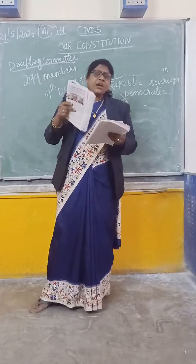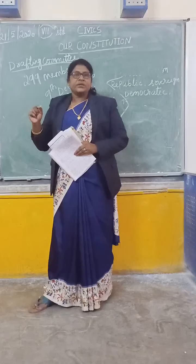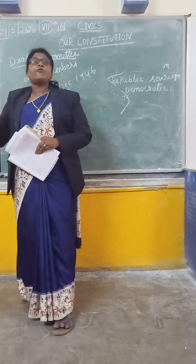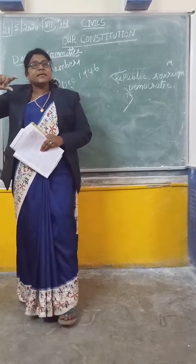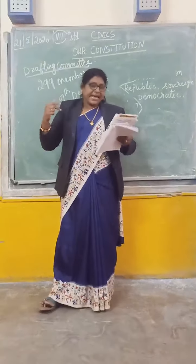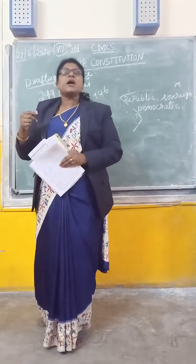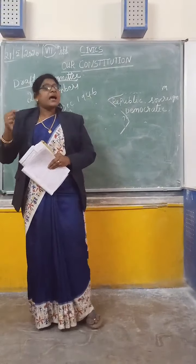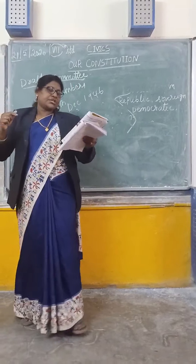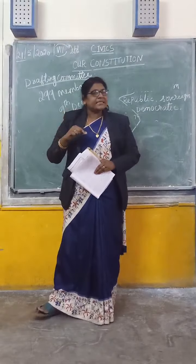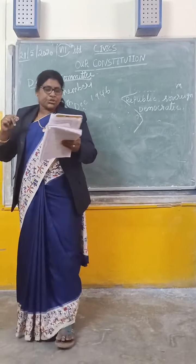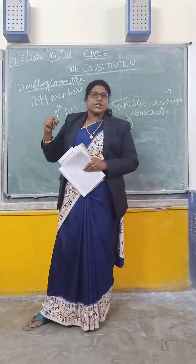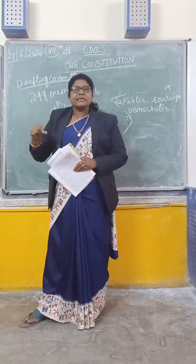A salient feature of the Indian constitution is that it is a written constitution. The Indian constitution is in written form and it is the lengthiest constitution. The structure, power, and extent of the three organs of government — executive, judiciary, and legislature — are all written in the constitution. There is a single constitution for both the central and state governments, which is why the size of the constitution is very big.